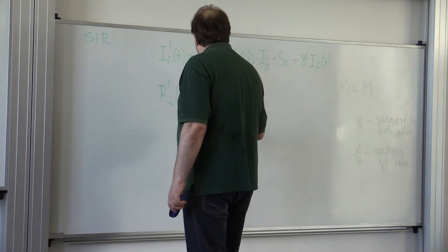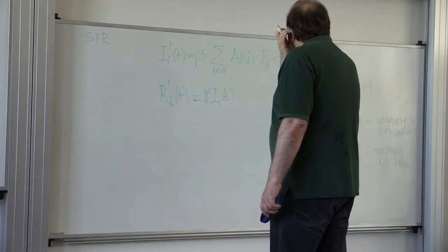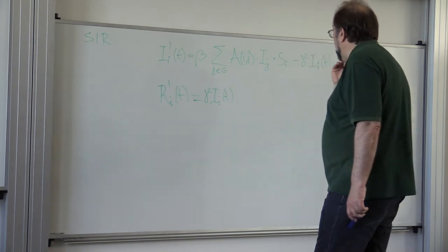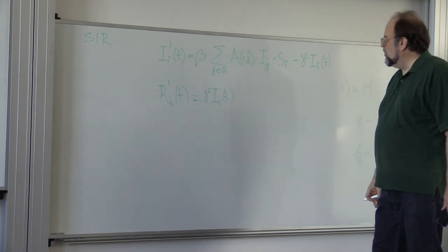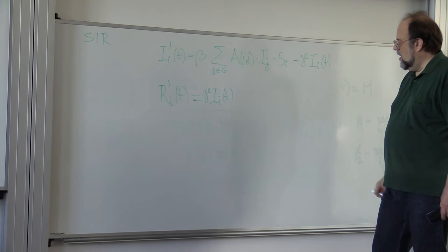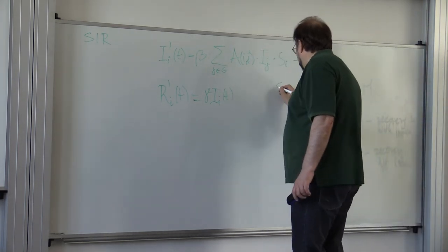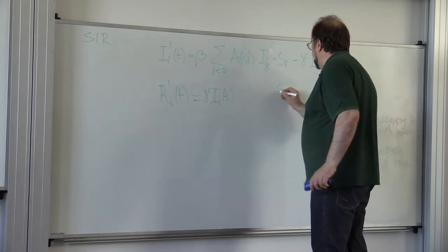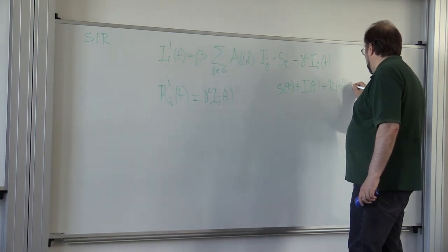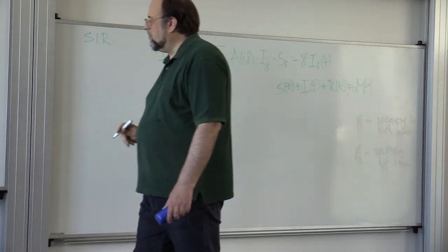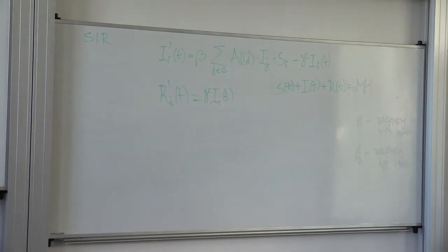And then do we have anything else? Not if we assume that all recovered people achieve immunity. So obviously, it is very easy to tweak the model to include more refined analysis. So here, S plus at every moment, S of I plus I of T plus R of T is the total population N. And this is, in fact, what is used to model the spread of, say, computer viruses. It's an extremely important and powerful, simple, yet very powerful model.